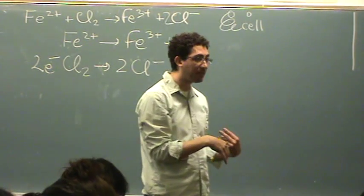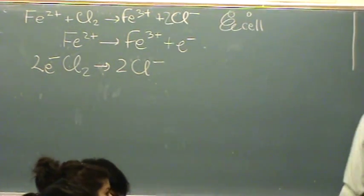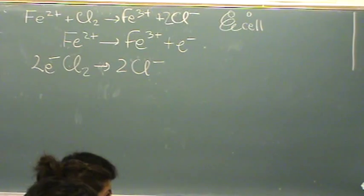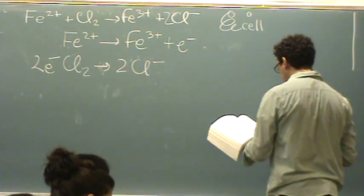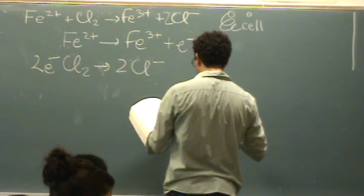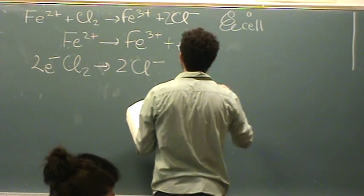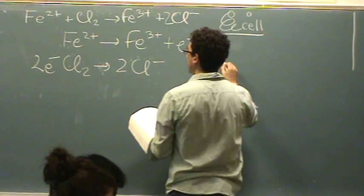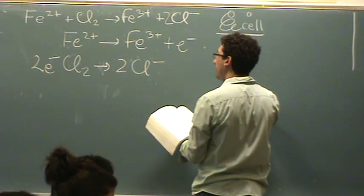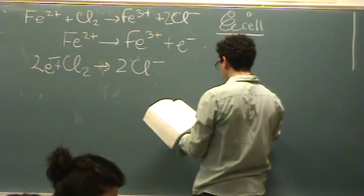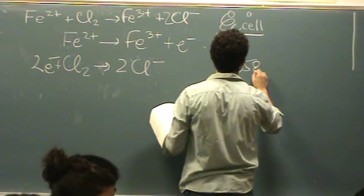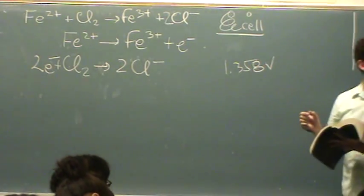Really what you need is that table in the text. And so you go to 20.1, which will be on the back of your exam. And the numbers you need, so you look up the first one, the Cl, for this reduction, this reduction is 1.35 volts. Cool so far?